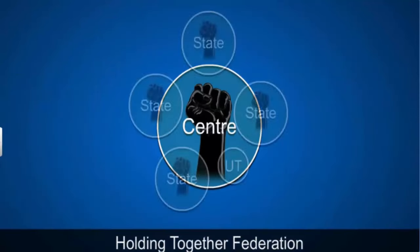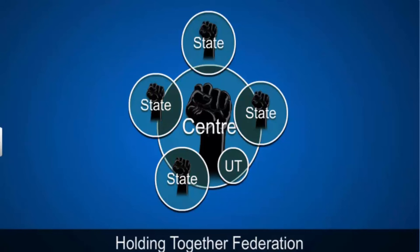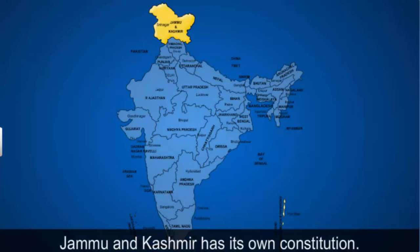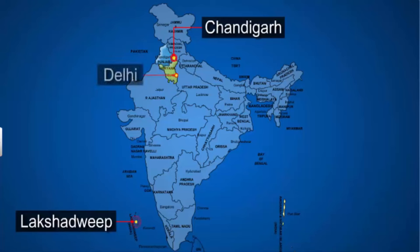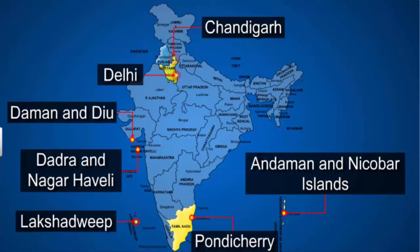A holding together federation does not give equal powers to its constituent units, meaning all states of the Indian Union do not have identical powers. States like Jammu and Kashmir enjoy a special status with their own constitution, and many provisions of the Indian constitution are not applicable to them. On the other hand, some units like Chandigarh, Lakshadweep, or Delhi enjoy very little power. These are known as union territories — too small to be independent states or to merge with existing states — and are governed directly by the central government.